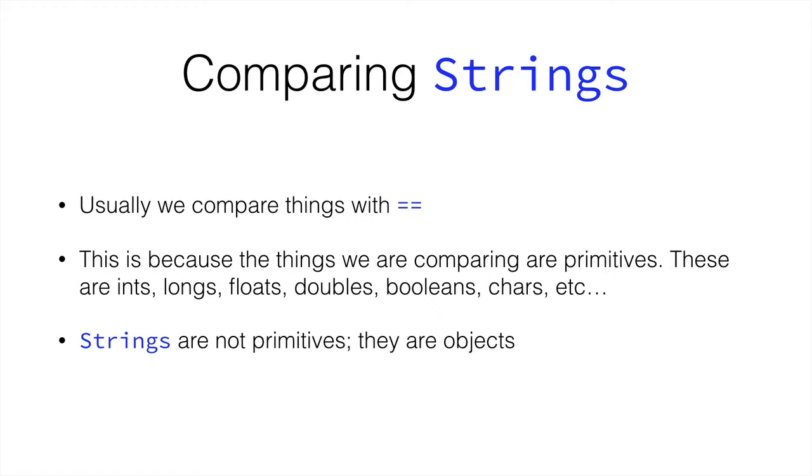They are objects. Just as we created our class dog, there is a class string that holds functionality regarding strings. This is why we don't compare strings with equals equals, because strings are not primitives. The value of the string, the hello world part of the string, isn't something that is inherent to the string. It is a property inside the object.